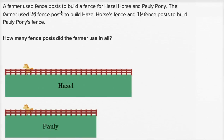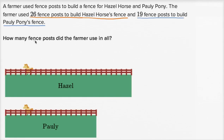A farmer used fence posts to build a fence for Hazel Horse and Polly Pony. The farmer used 26 fence posts to build Hazel Horse's fence and 19 fence posts to build Polly Pony's fence. How many fence posts did the farmer use in all?